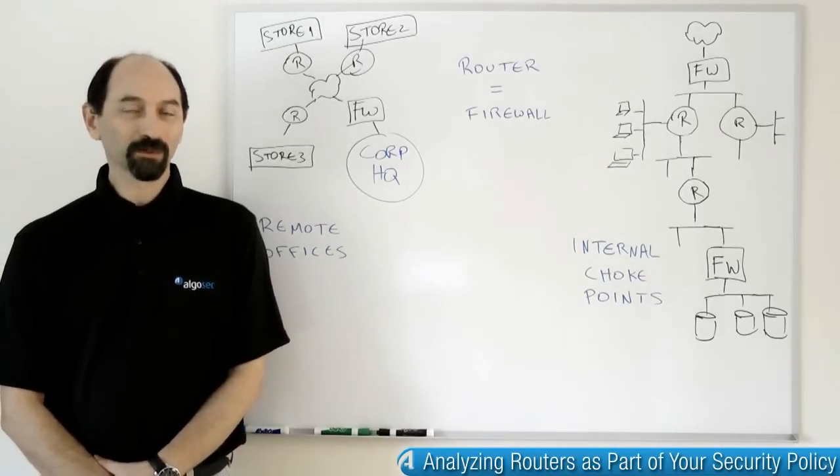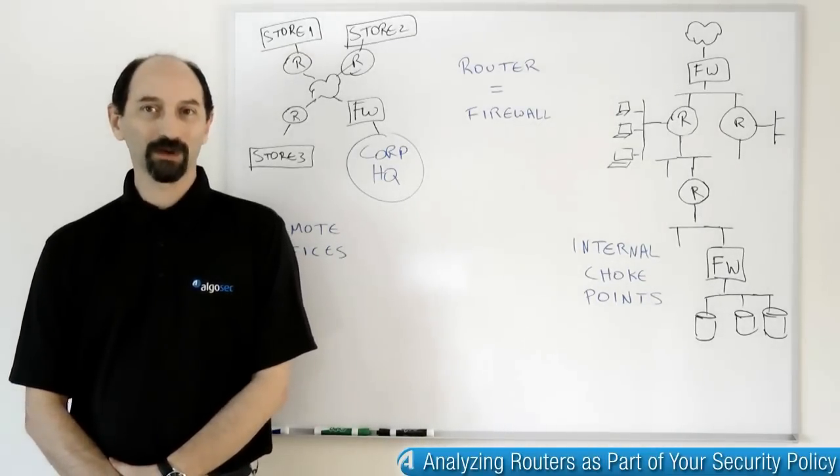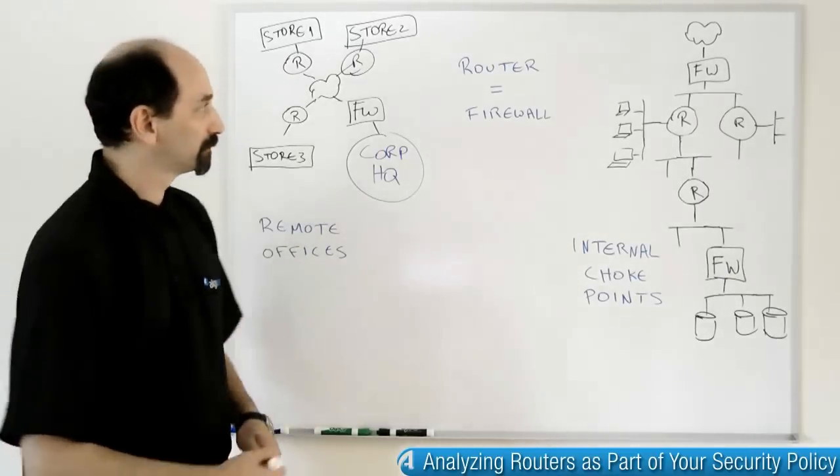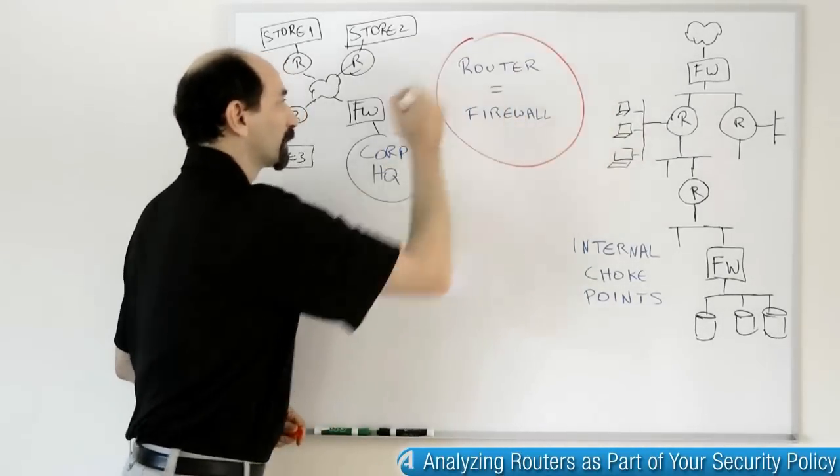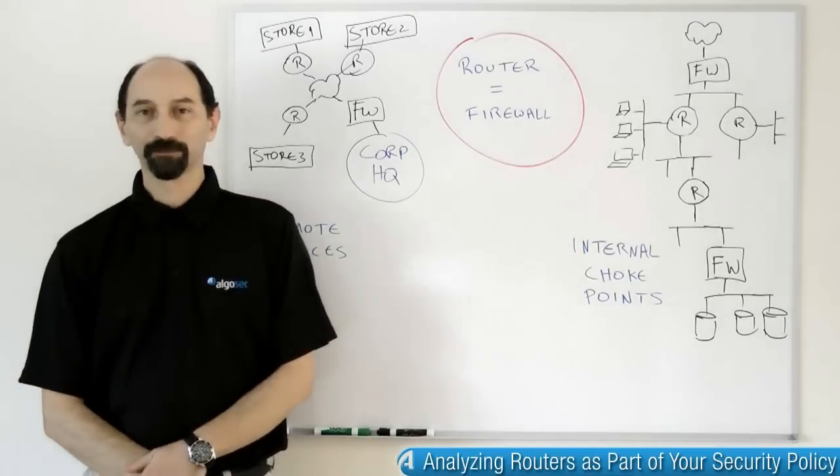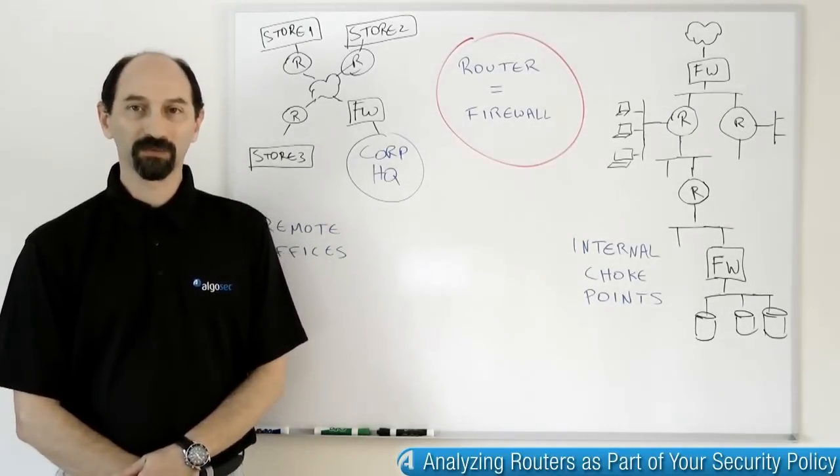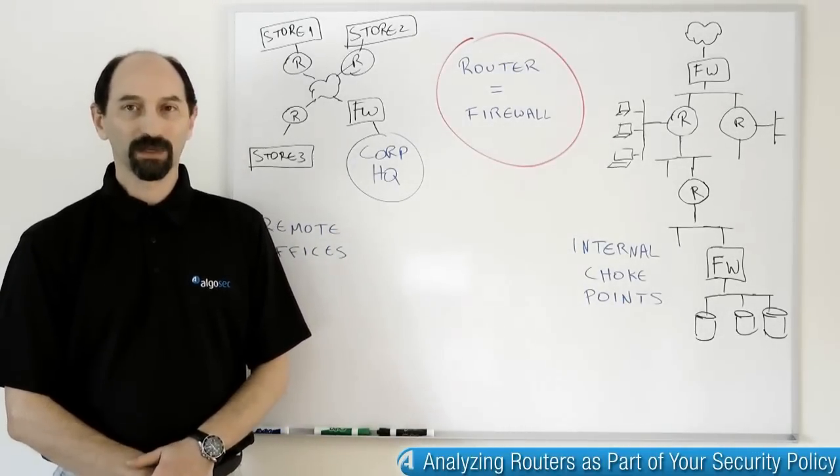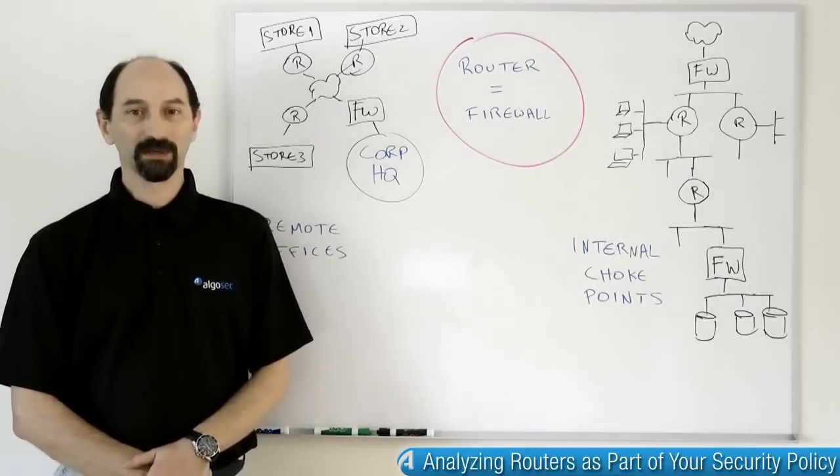So you may be wondering why are we talking about routers in a firewall class? Well, routers are firewalls. Every modern router has filtering capabilities and is able to filter traffic just like a firewall using what are known as access control lists or ACLs.